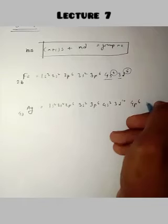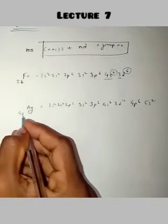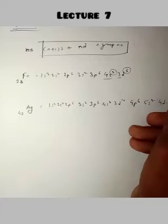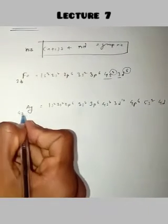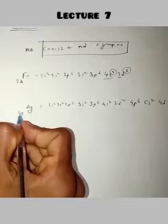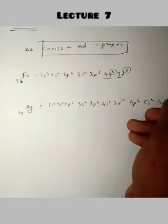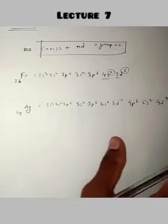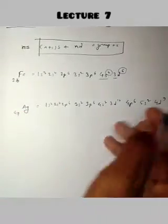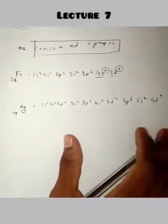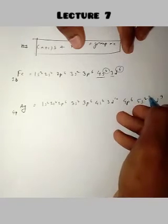Then 5s² comes next. In the case of silver, 5s¹ because the 4d orbital also fills. The 4d is also involved. Silver's configuration shows 4d fills. The d-orbital filling follows this pattern.